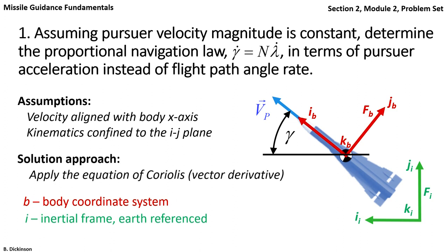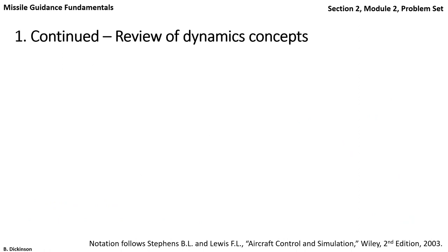And our approach to calculate or determine acceleration is to apply the vector derivative or the equation of Coriolis. Now before we proceed, let's do a little review. An inertial frame is a frame of reference where Newton's laws are valid. Here we take the frame Fi to be referenced to the earth as an inertial frame.